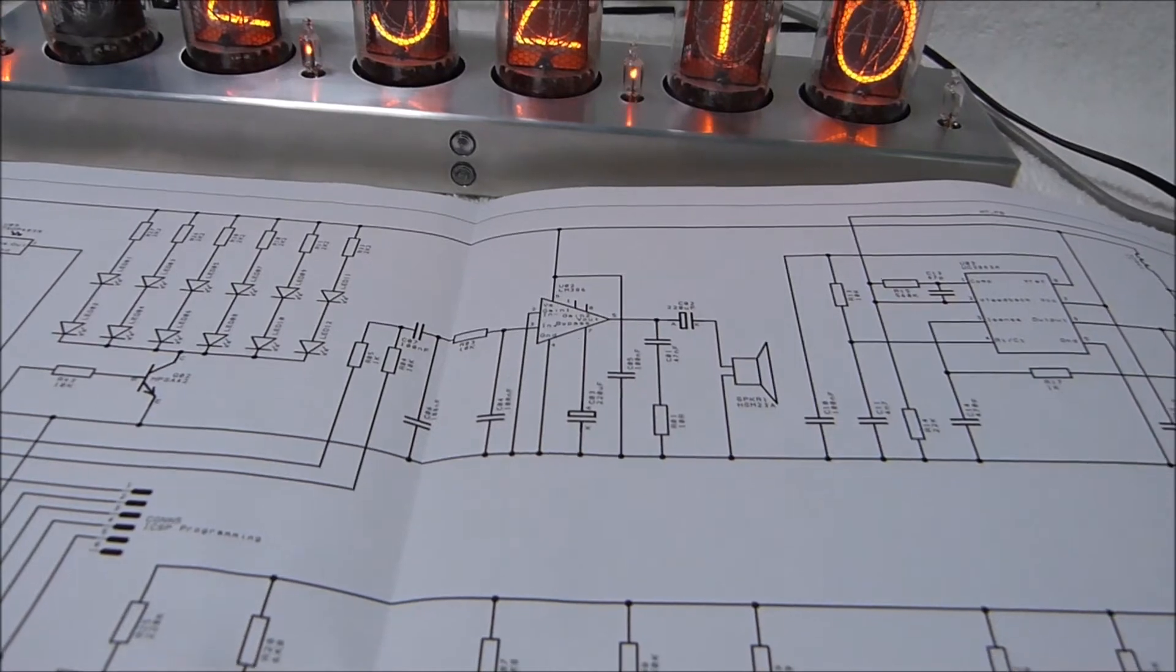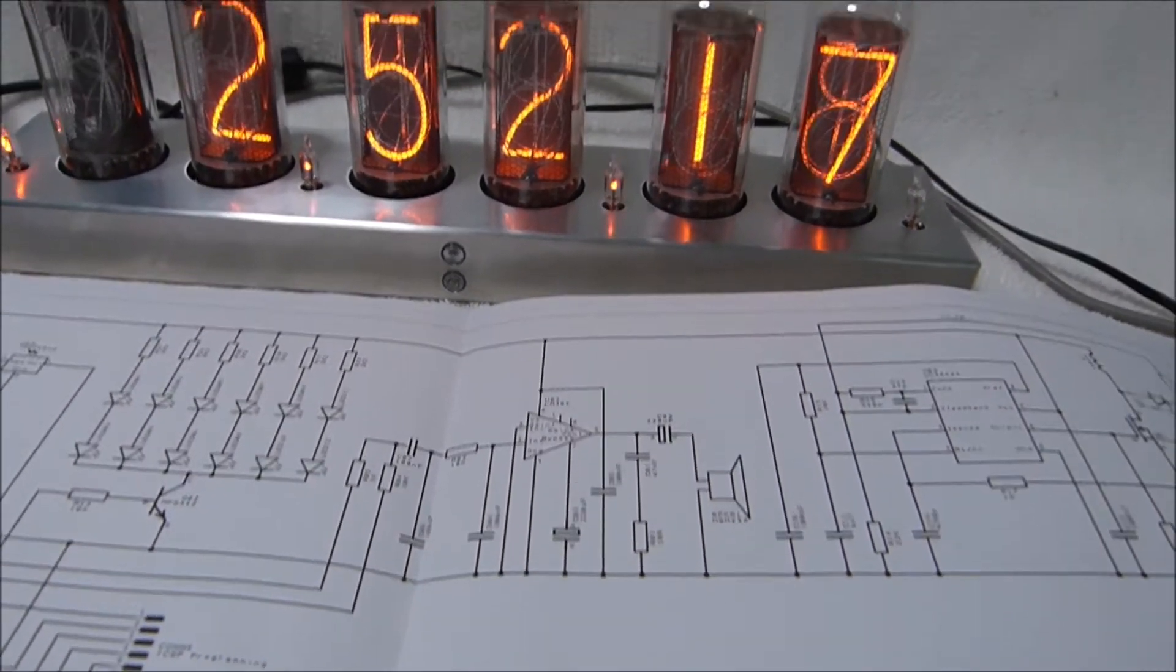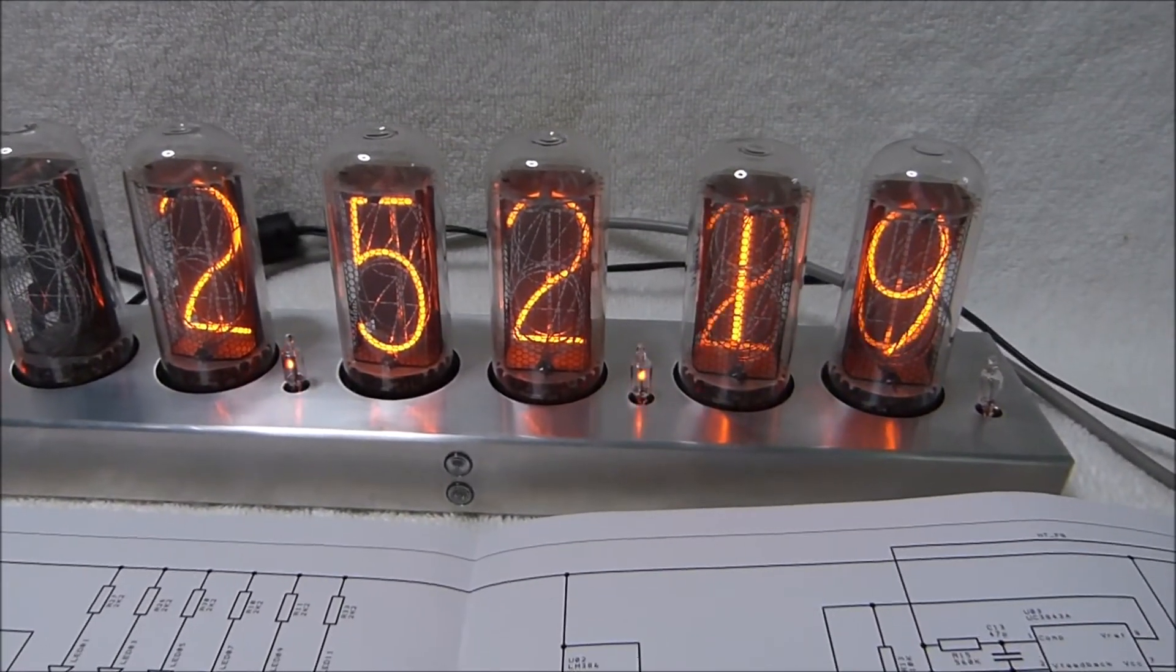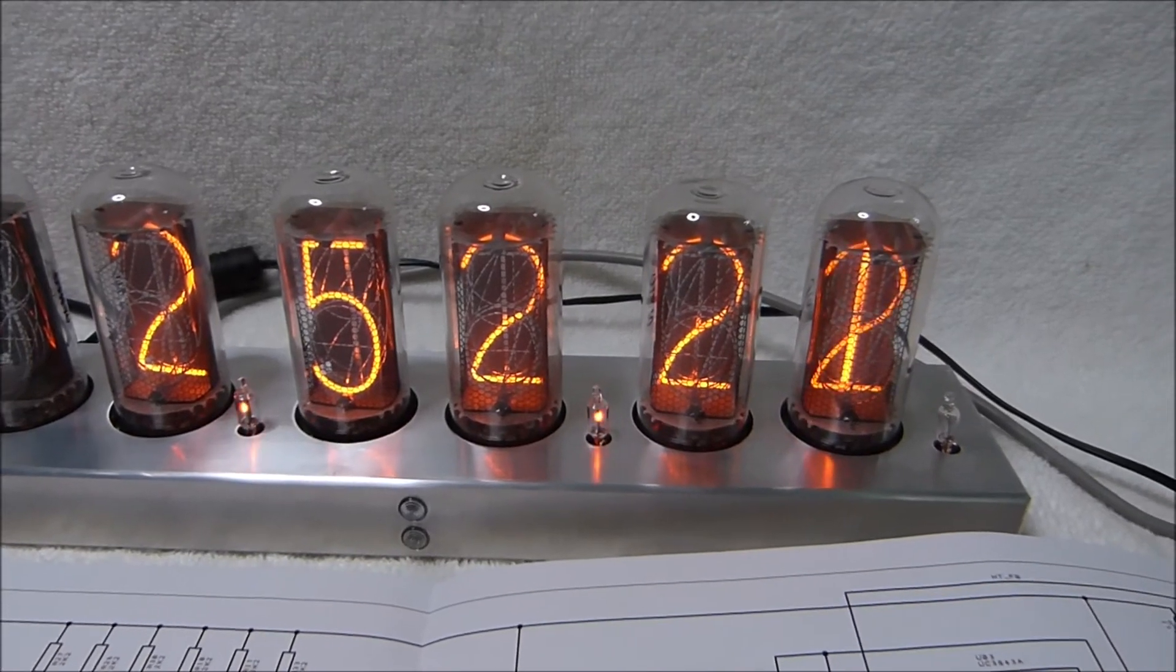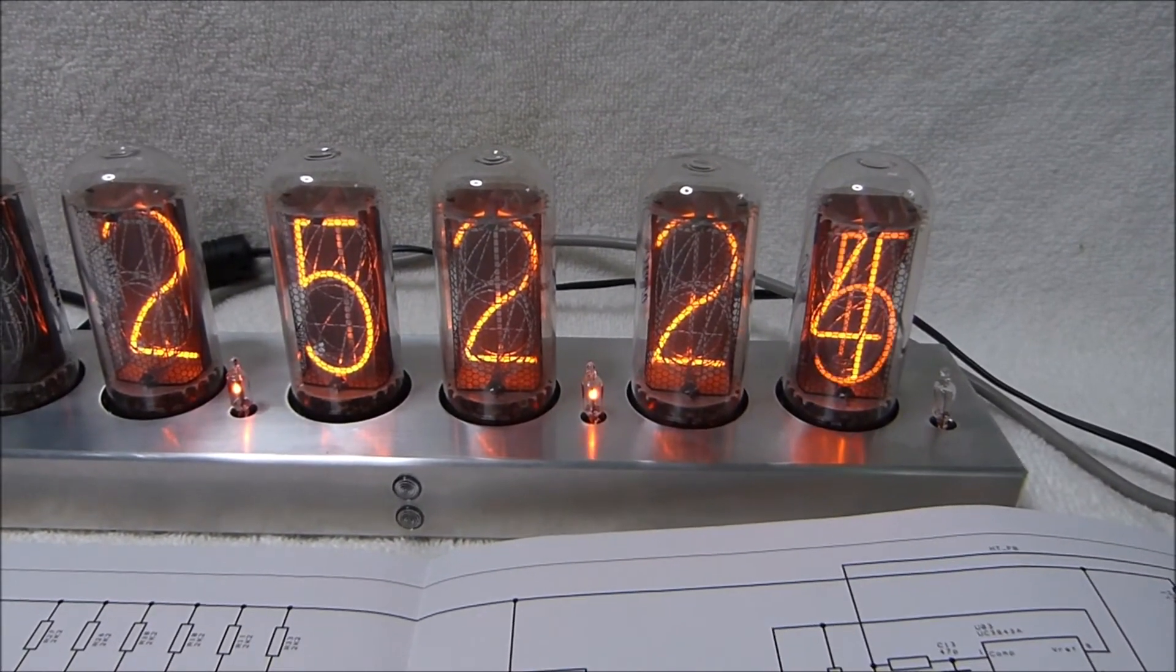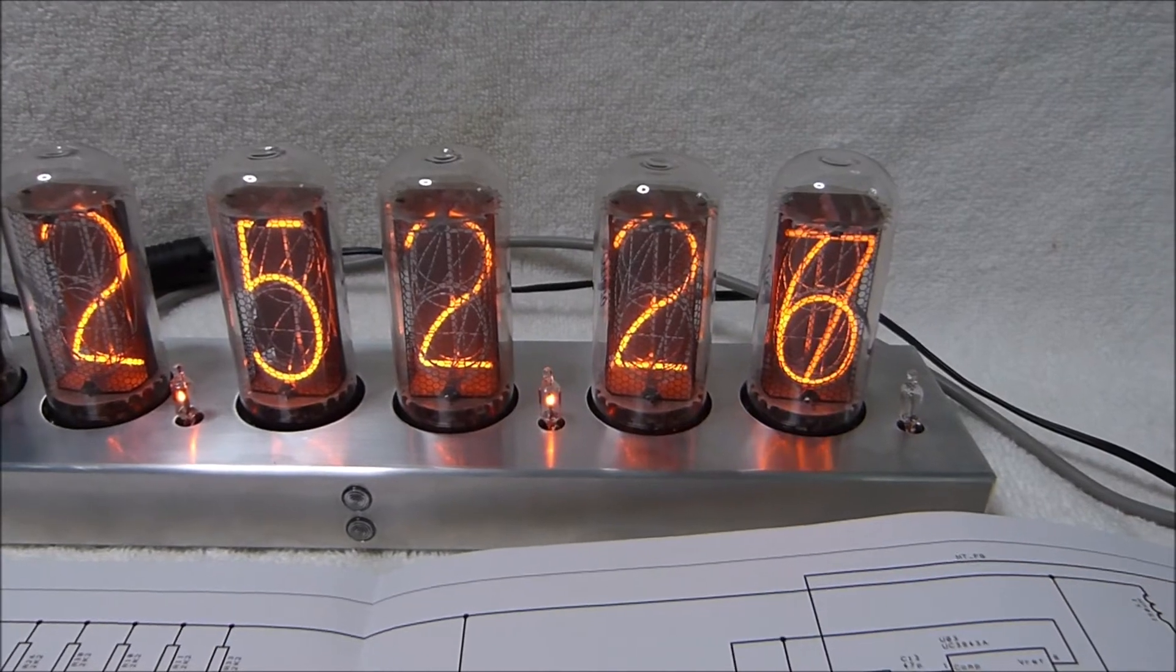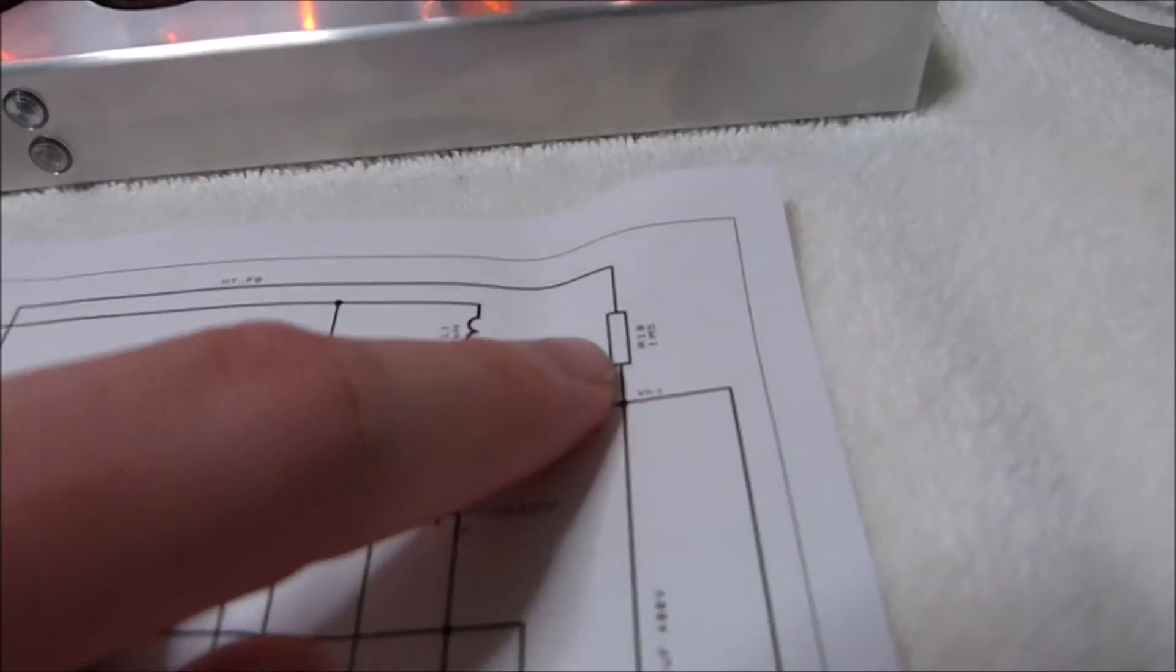While some Nixie clocks have a potentiometer for adjusting the output voltage, this one does not. That was arguably a design oversight, as the voltage varies substantially with small changes to the value of the 1.5 mega ohm high side resistor. This one right here.